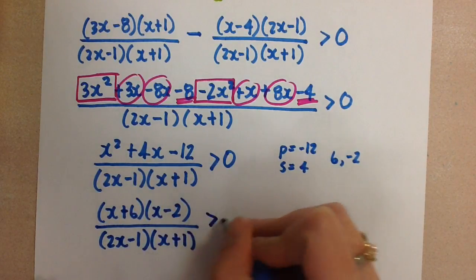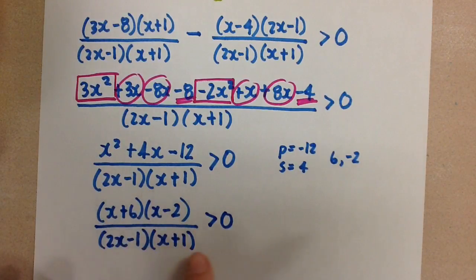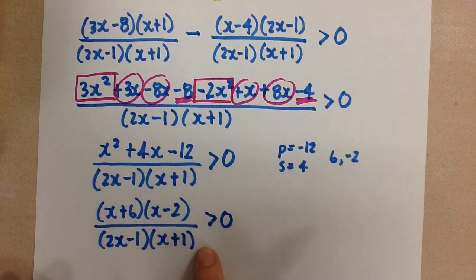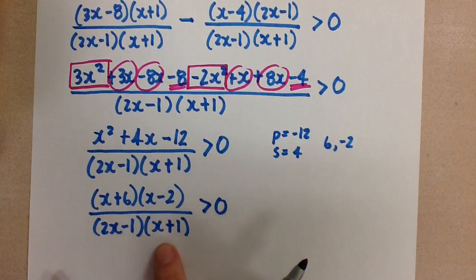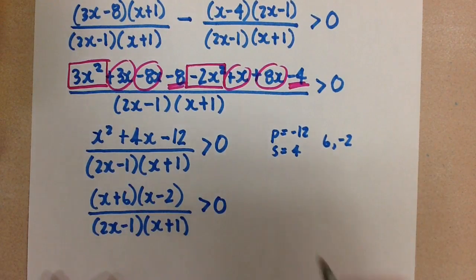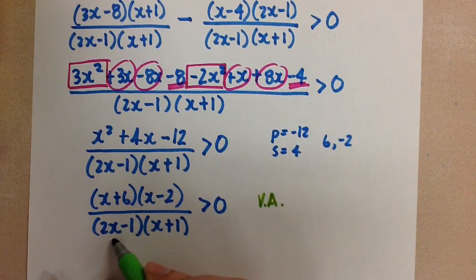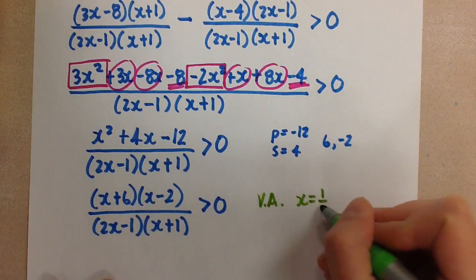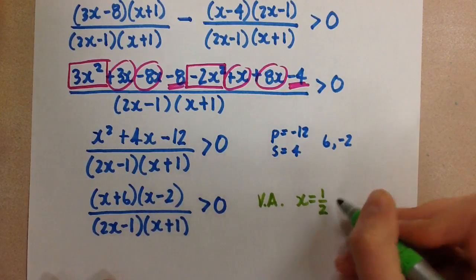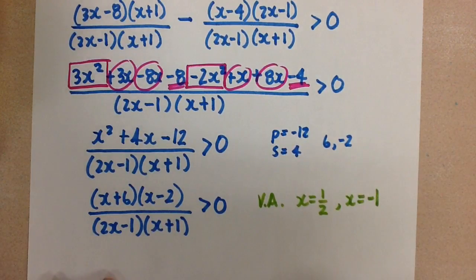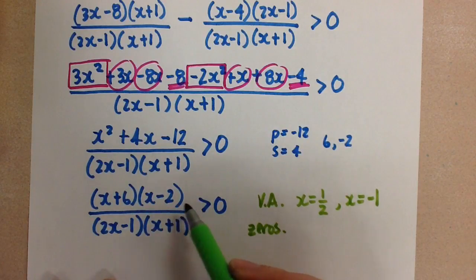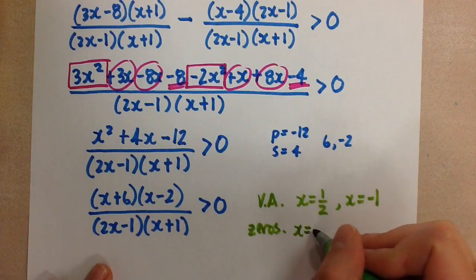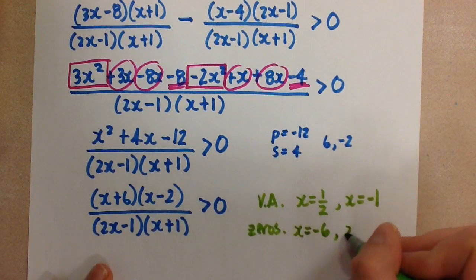So we now have (x + 6)(x − 2) / [(2x − 1)(x + 1)] > 0. Both the numerator and denominator are factored, which is useful because now we determine the asymptotes and zeros. For vertical asymptotes — those come from the restrictions on the denominator — x can't be 1/2, so there's a vertical asymptote at x = 1/2, and x can't be −1, so there's a vertical asymptote at x = −1. For the zeros, from the numerator: x = −6 and x = 2.